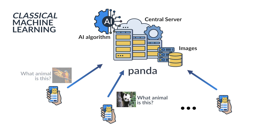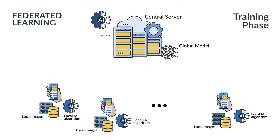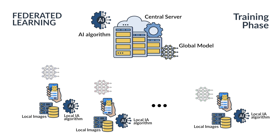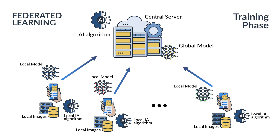In federated learning, the philosophy is radically different. The training is not centralized. Instead, the idea is that multiple devices actively cooperate to train the model. Using the same example, the algorithm is now locally trained at each mobile phone, using only the data stored in that same device. Instead of sharing the photos, each mobile phone periodically sends the information of the algorithm — what we call the local model — to the central element.